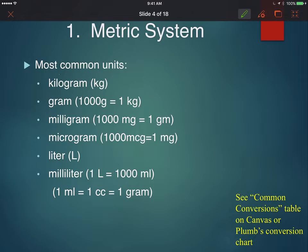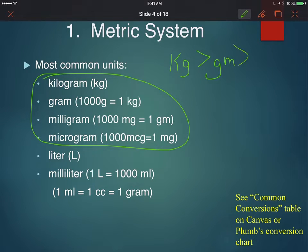We often will use these units for weight: the kilogram, the gram, the milligram, and the microgram. Keep in mind that different units of metric measurements differ from one another by power of a thousand. For instance, a kilogram is greater than a gram, and a gram is greater than a milligram, and a milligram is greater than a microgram. And they're by a thousand.